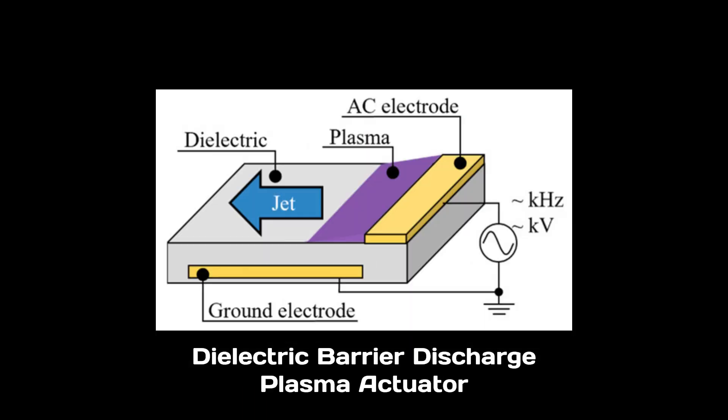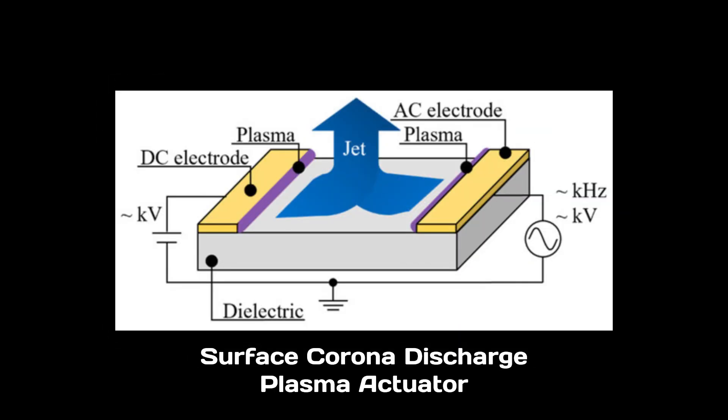A dielectric barrier discharge plasma actuator, or DBD for short, creates a body force that causes the boundary layer fluid particles to gain velocity, which speeds up the airflow and allows it to reattach with the surfaces.